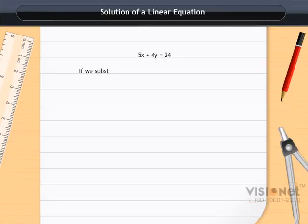If we substitute x = 4 and y = 1, we find that the left hand side of the equation, 5x + 4y, equals 5